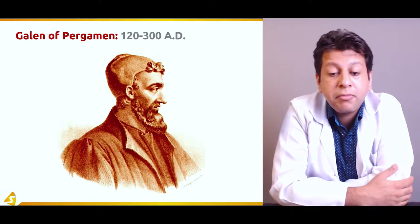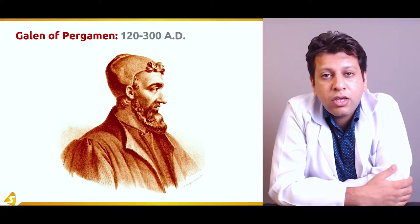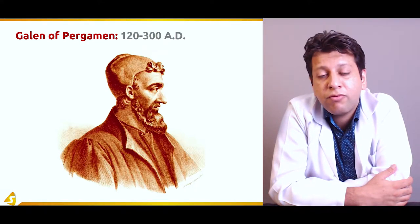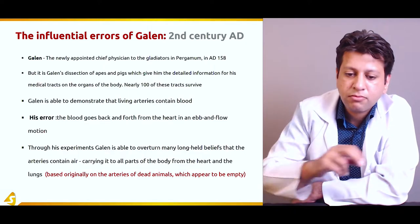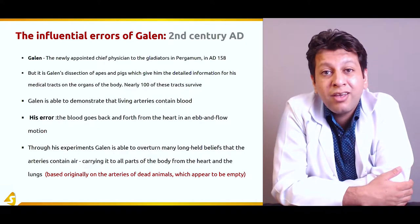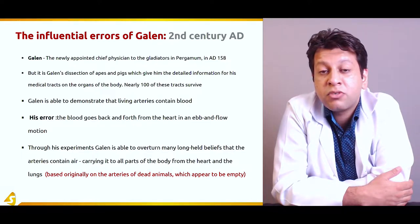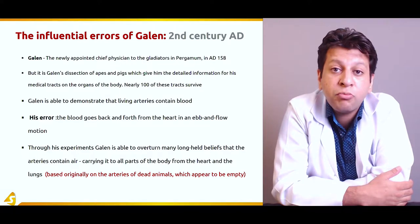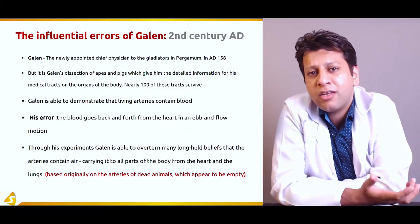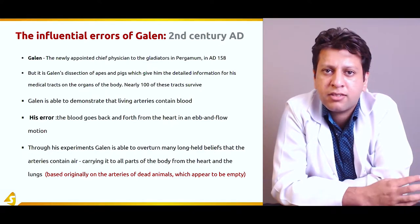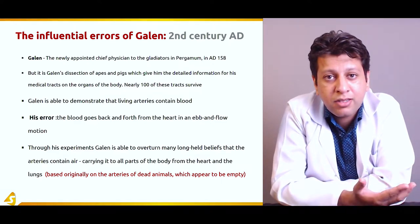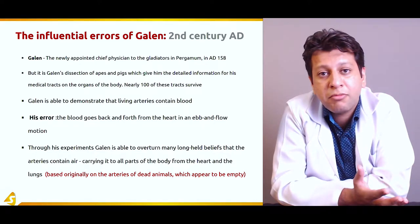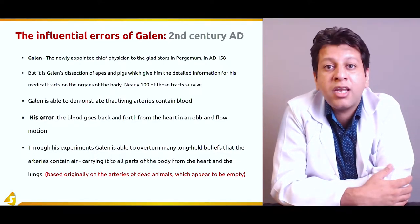Galen of Pergamon conducted experiments and dissected animals — his main book was on the dissections of apes and pigs. There were serious errors, as Galen generalized the anatomy seen in apes and pigs as if humans would be the same, although we now know there are significant differences between human anatomy and the anatomy of other mammals such as apes or pigs.